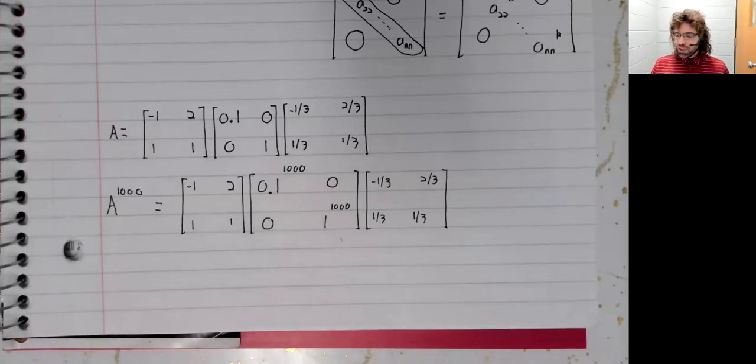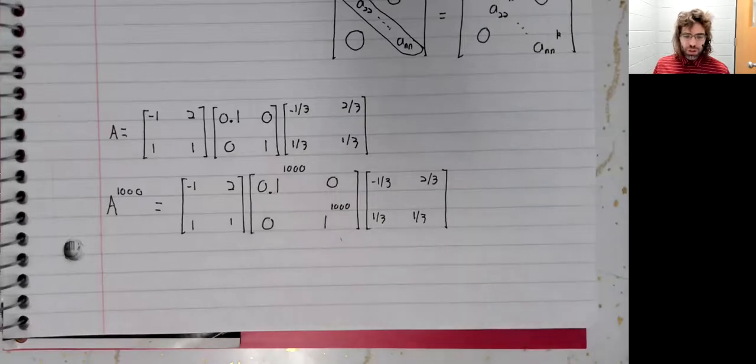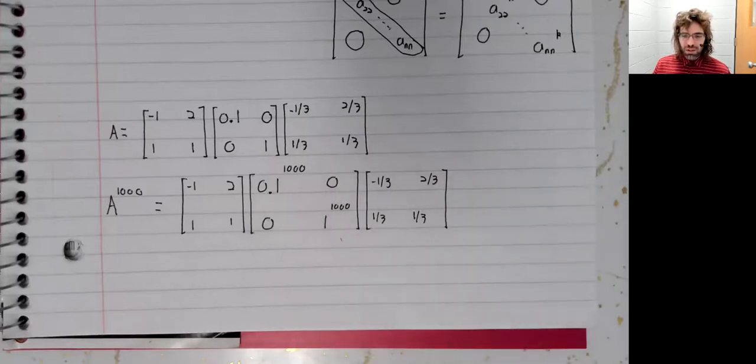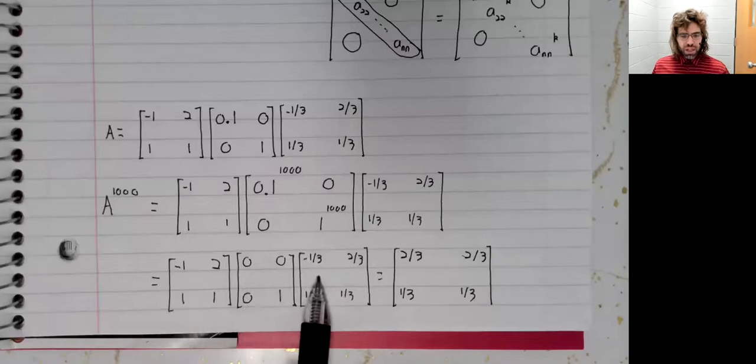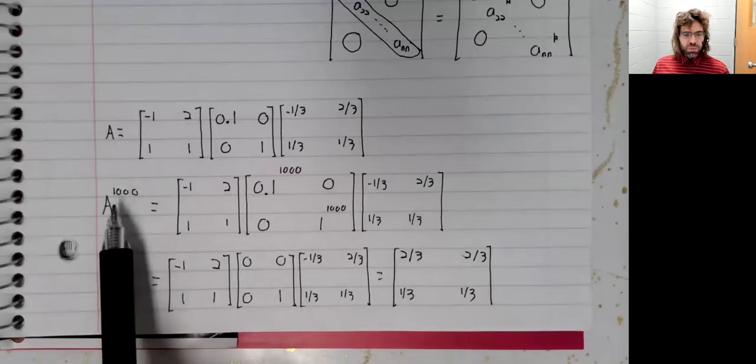Up to basically any number of decimal places, like even if we were working with machine precision here, point one to the 1000th is just going to be zero. One to the 1000th is going to be one. And we can multiply three matrices together and therefore compute this power.